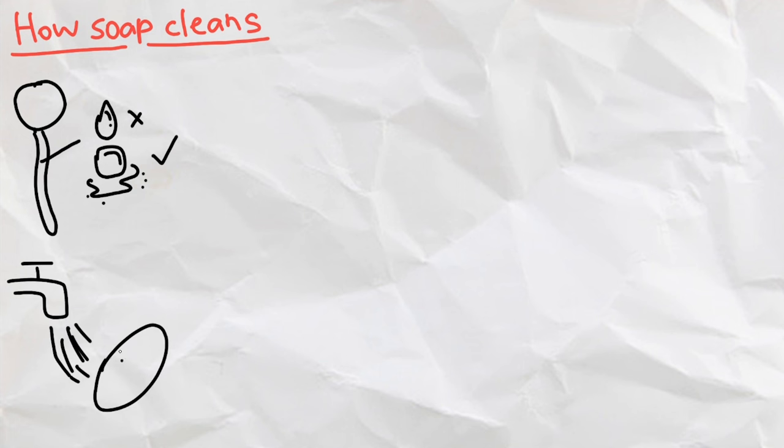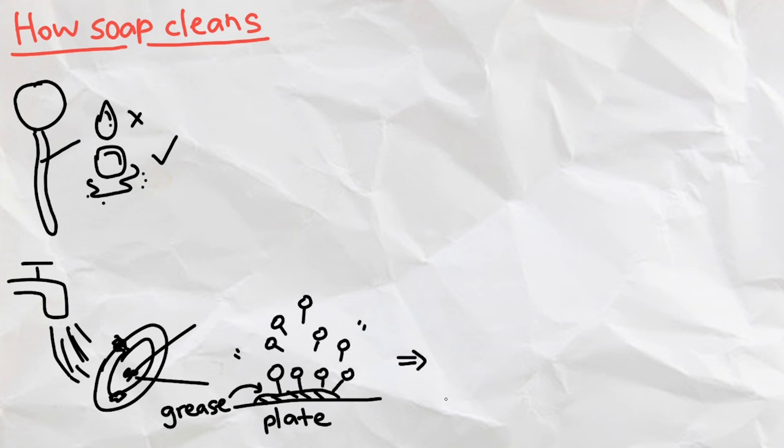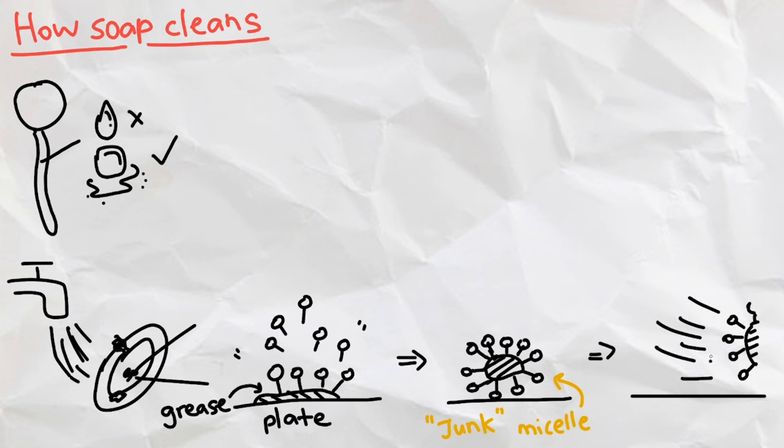When washing the dishes with soap, the hydrophobic tails are attracted to the grease and dirt, which contains fatty acids, on the plate. With enough of those tails, a new micelle is formed with the junk suspended inside. Then, after a quick rinse, all of those junk micelles get washed away, leaving us with plates with no stains.